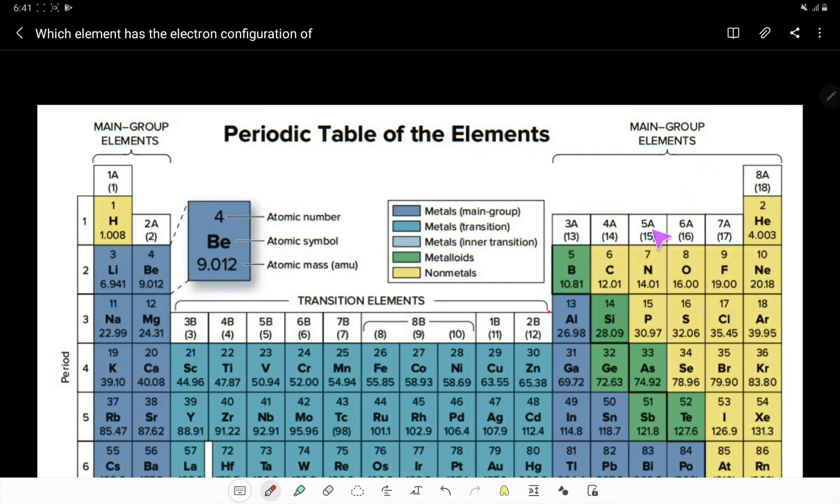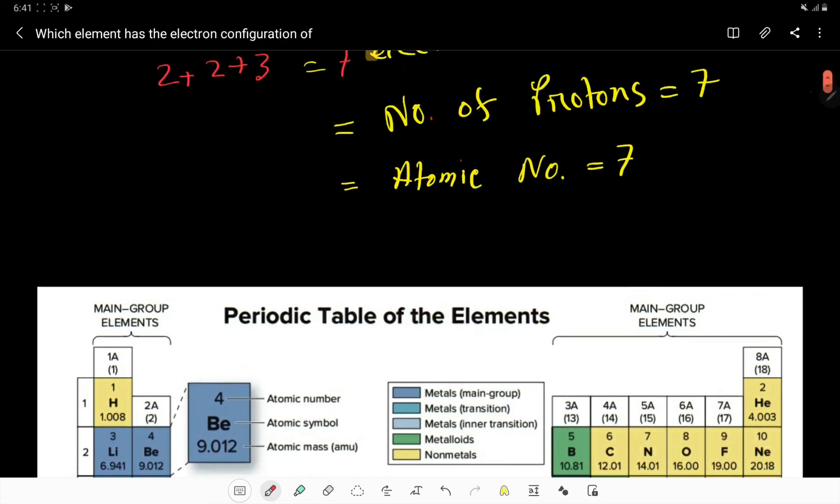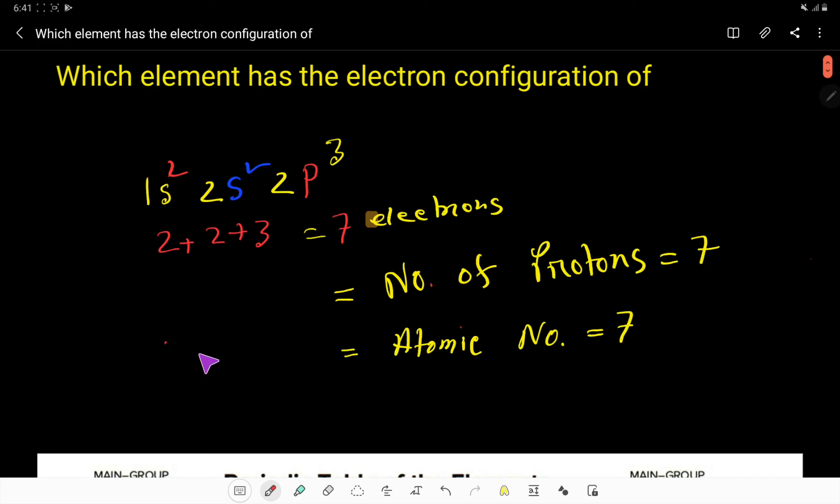This is nitrogen. Its atomic number is 7 and its electronic configuration is this. Atomic number 7 means it has 7 protons and 7 electrons. Thank you for watching this video.